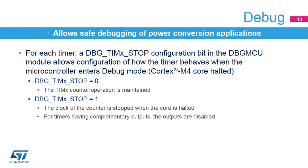The timer's state in debug mode can be configured with one bit per timer. If the debug bit is reset, the timer clock is maintained during a breakpoint. If the debug bit is set, the timer counter is stopped as soon as the core is halted, and outputs of timers with complementary outputs are disabled and forced to an inactive state. This prevents power stages from being damaged by excessive current or motors from being left in an uncontrolled state when hitting a breakpoint.